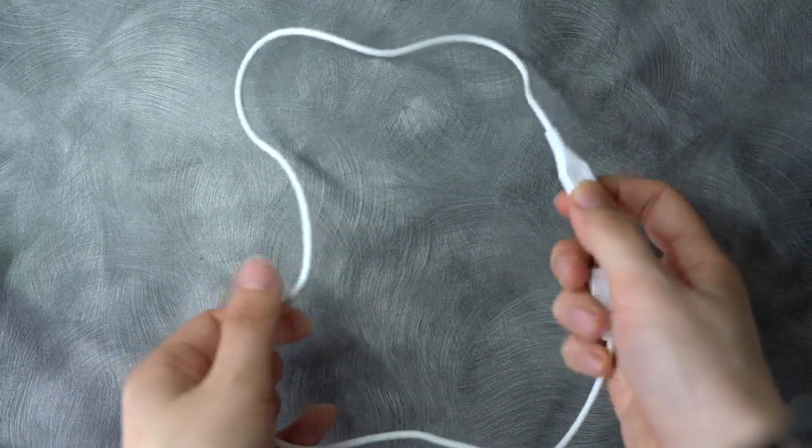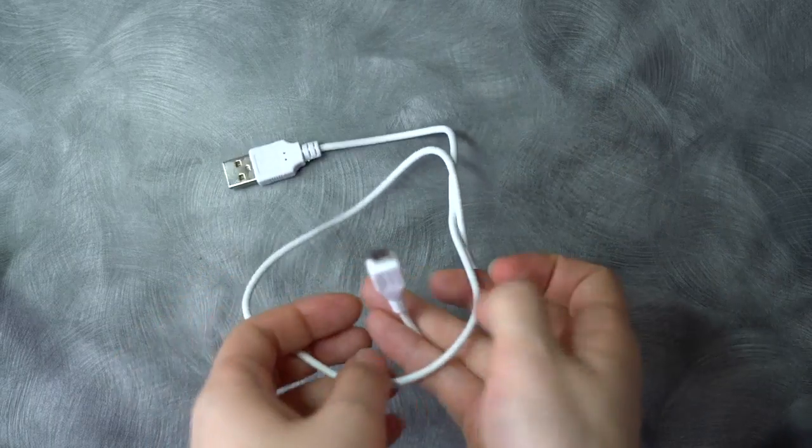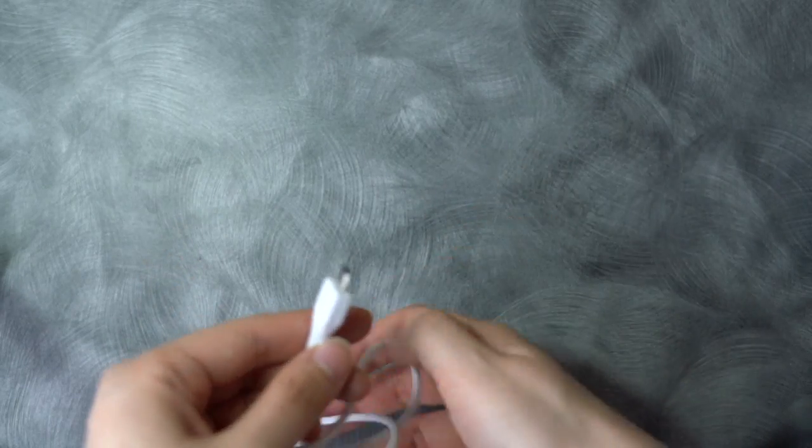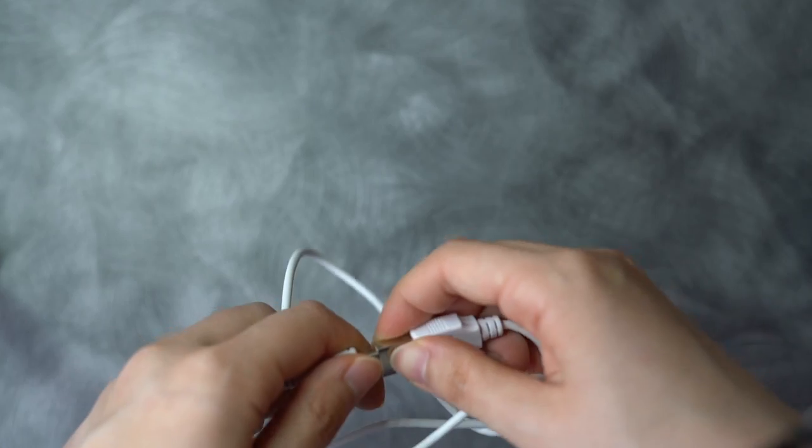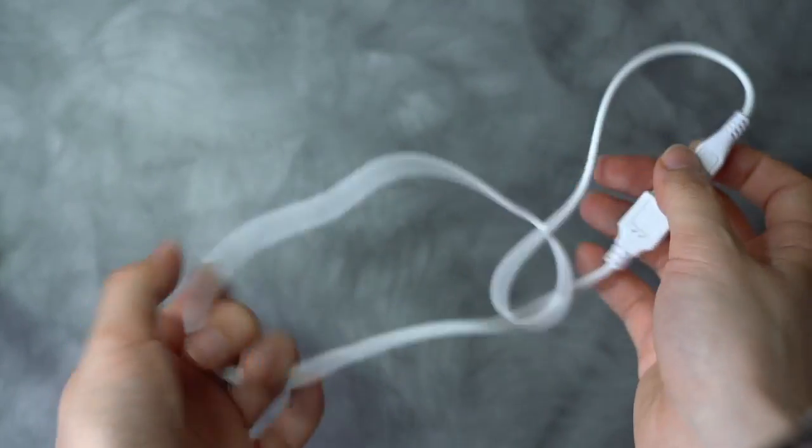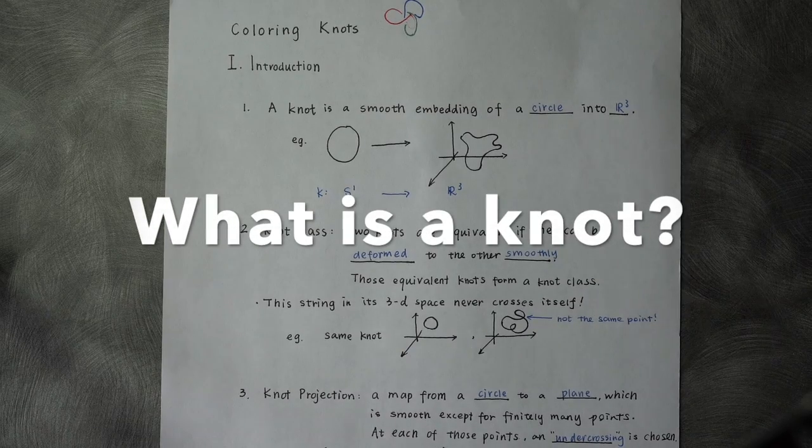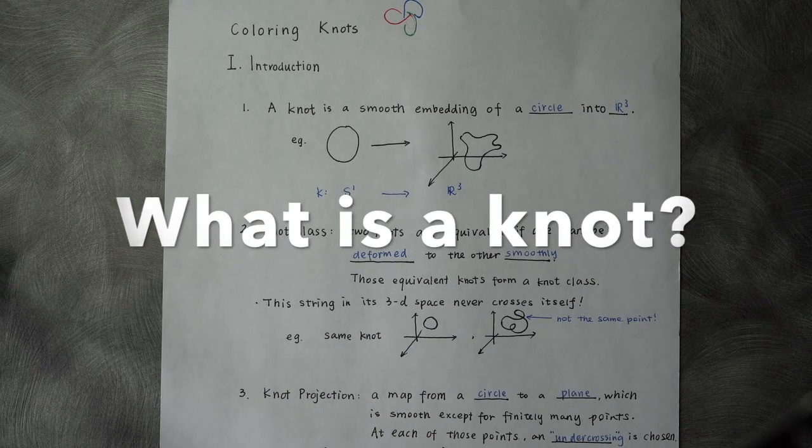If you want to make it more complex, you can make some twists and crossings here, then make the ends meet. This is another knot. So now we will give out the formal definition for a knot.